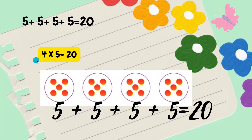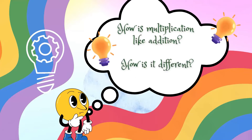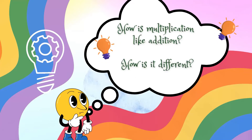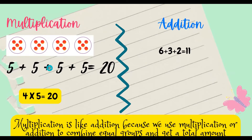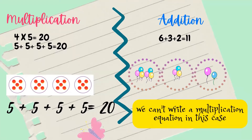So that is my multiplication sentence: 4 times 5 equals 20. Now I think I'm ready to answer these two questions. How is multiplication like addition? How is it different? When we multiply, we add equal numbers to get a total amount. In addition, we don't add the same number — we add different numbers. Multiplication is like addition because we use multiplication or addition to combine equal groups and get a total amount. We can write a multiplication equation in this case.